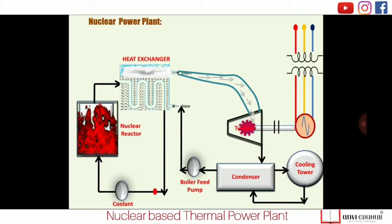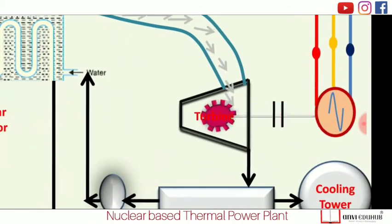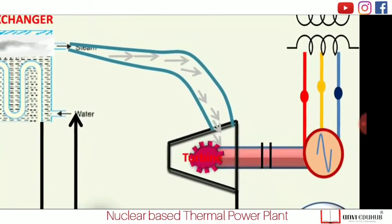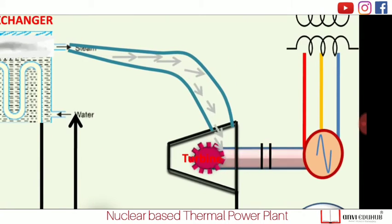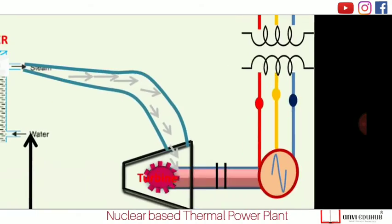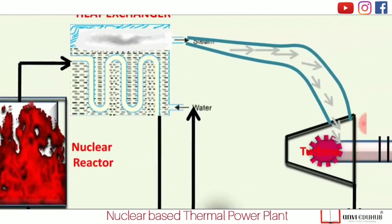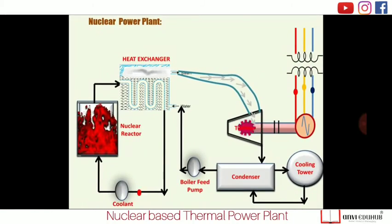In the heat exchanger, heat is transferred to water, raising its temperature and converting it into steam — then into high-pressure steam. That high-pressure steam rotates the steam turbine, which is mechanically coupled with an alternator via a shaft. As the steam turbine rotates, the alternator also rotates and converts mechanical energy into electrical energy, which is then supplied to the grid.